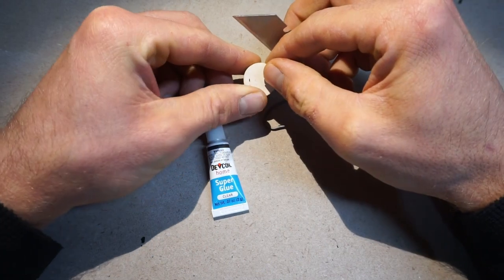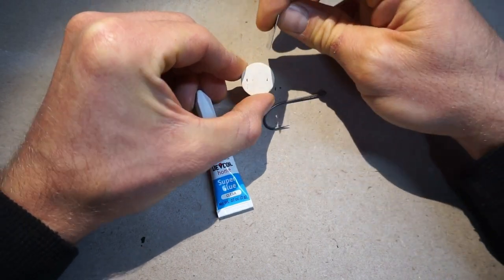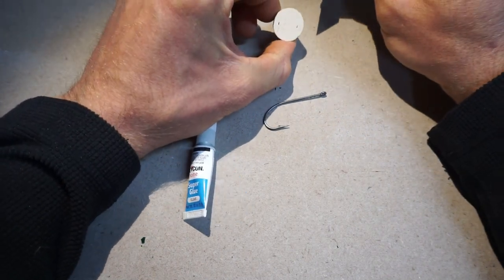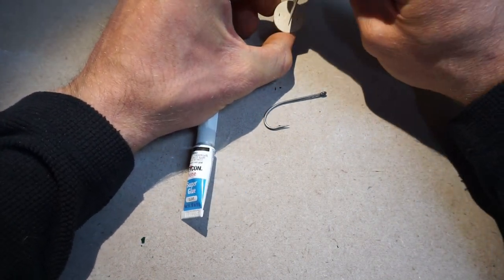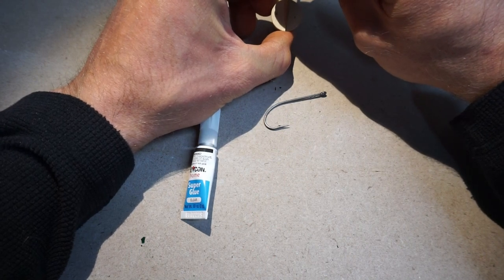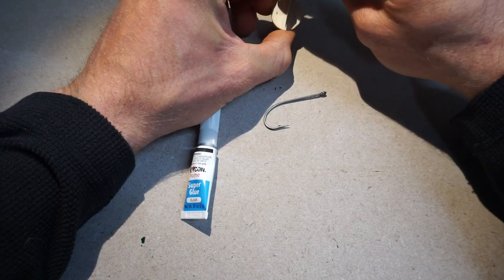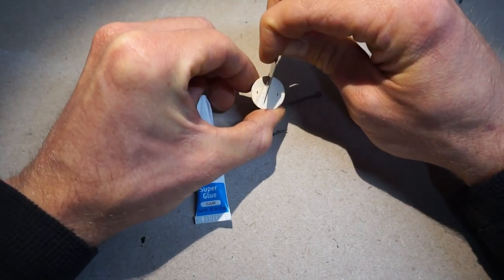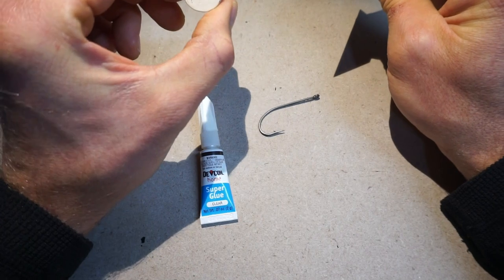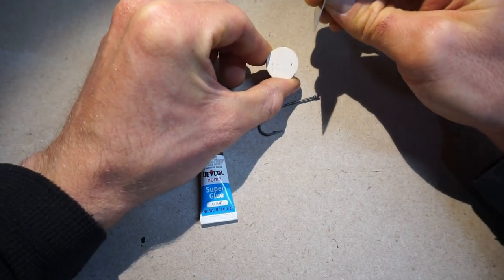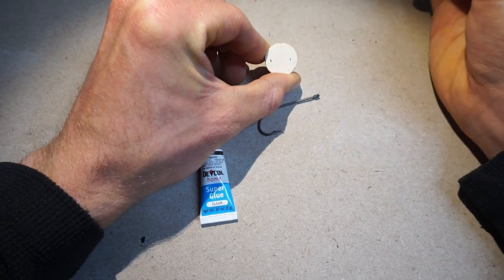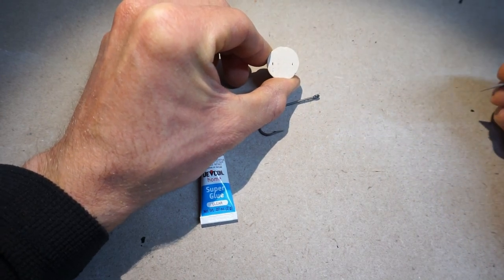I always kind of eyeball where the center of the popper is. It's approximately, let me go with the grain right there. What I'll do is I will make myself a little pilot cut. Okay, so now I have my little pilot cut.